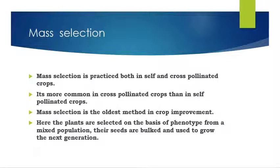It is one of the oldest methods in crop improvement programs. Mass selection is practiced both in self and cross pollinated crops, but it is more commonly used in cross pollinated crops than in self pollinated crops.